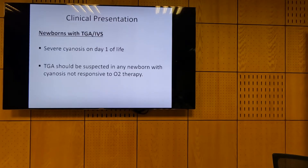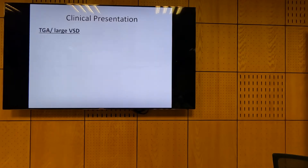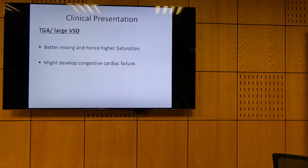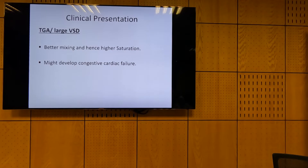For the clinical presentation of simple TGA — TGA with intact ventricular septum — this baby is cyanotic. If you have a TGA with a large VSD, the VSD is a site of mixing. If I have a large VSD, then I have enough mixing, so I expect this child to be less blue. This patient has better mixing because oxygenated blood can go more easily to the aorta. This baby won't be fully saturated — not 90% — but somewhere in the 80s, less blue than simple TGA. And it might develop congestive heart failure because of overflow to the pulmonary artery due to lower resistance.